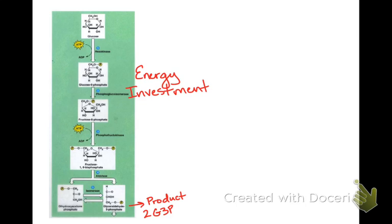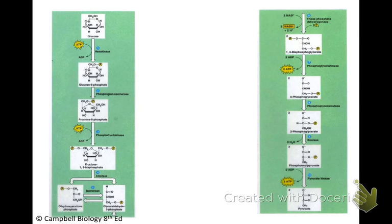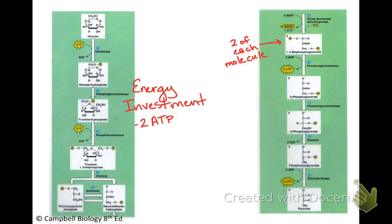So after we've invested the energy, now we get the payoff phase, which now, remember, we had 2G3P. We invested, so we're negative 2 ATP, but we've gained, now we have 2G3P. And so we're going to have 2 of each of these molecules as we walk through this process.